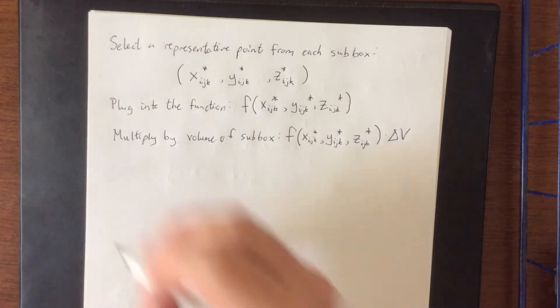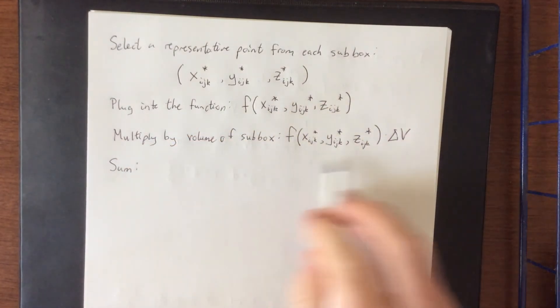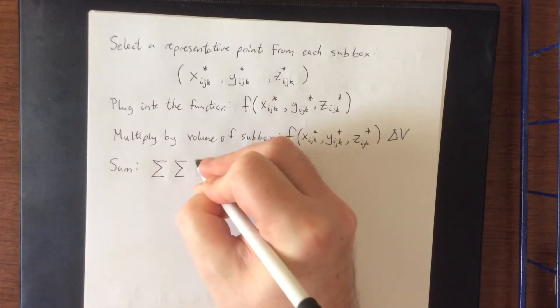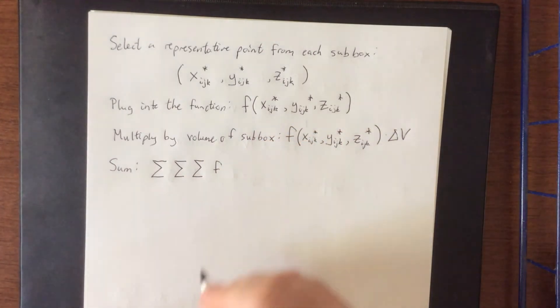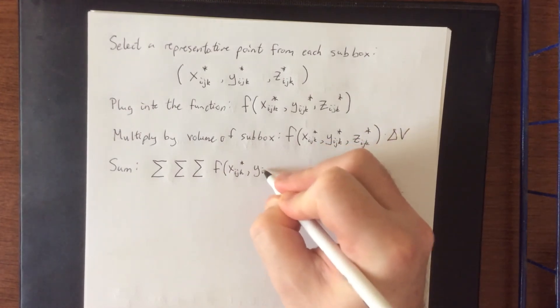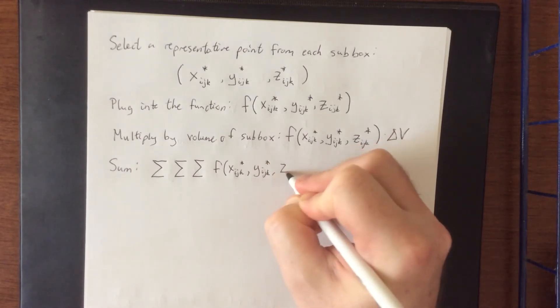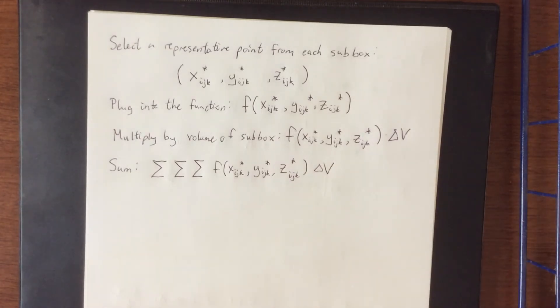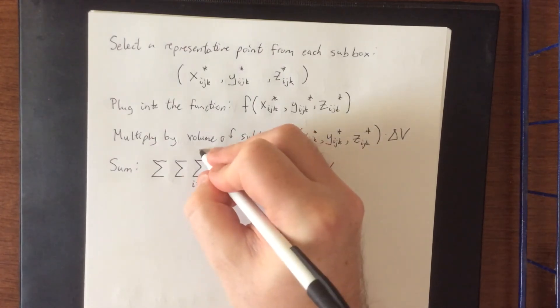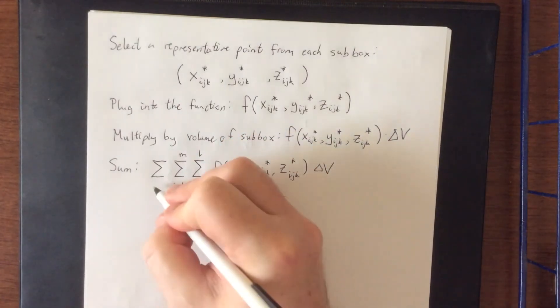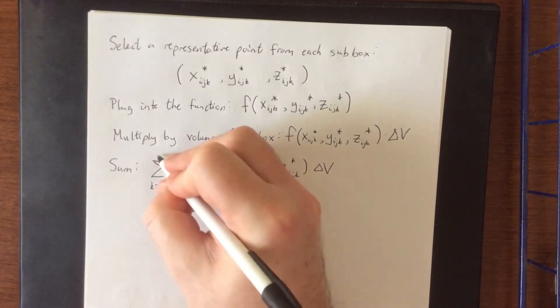So this approximates a hypervolume for just that sub box. To approximate the total hypervolume, we need to sum over all of these. Now we have three different indices, which means that we are going to need a triple summation. That triple summation is eventually going to turn into a triple integral as soon as we allow some variables to go toward infinity, which hopefully by this point in your calculus career is not really a surprise that a summation becomes an integral. Now the index i, that was for x, so i will go from 1 to l, j is for y, so that'll go from 1 to m, and k is for z, and that'll go from 1 to n.